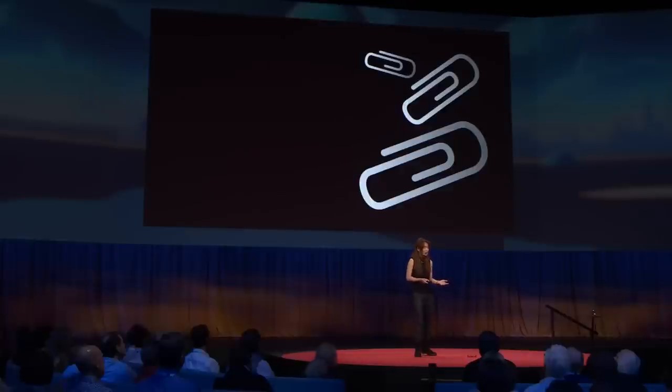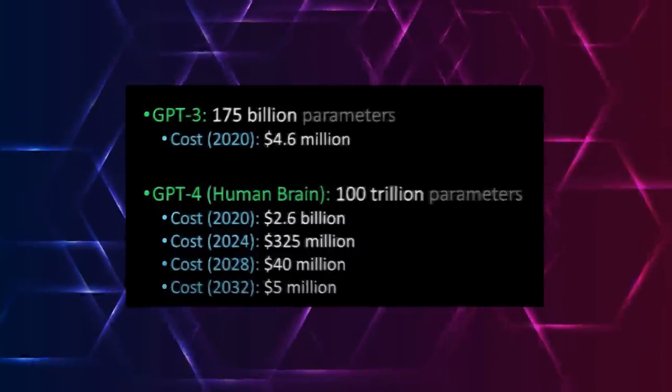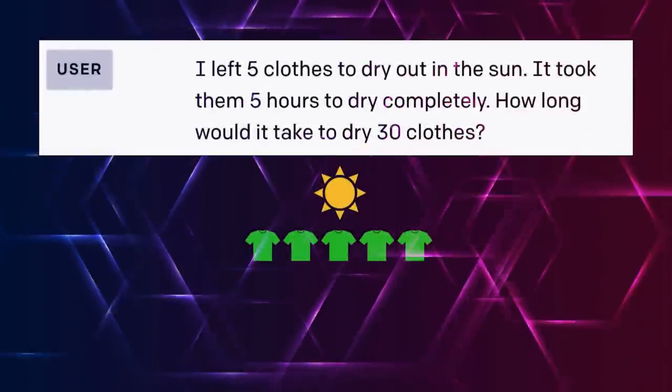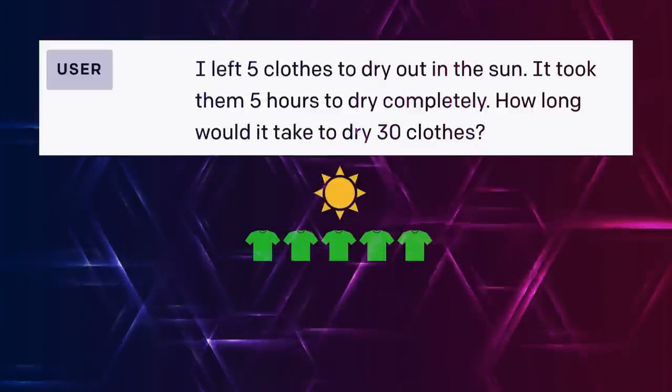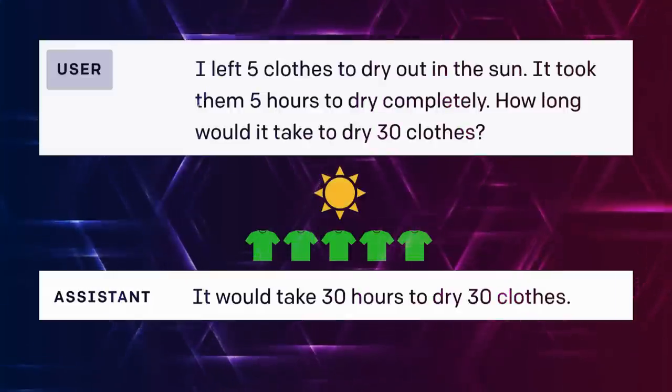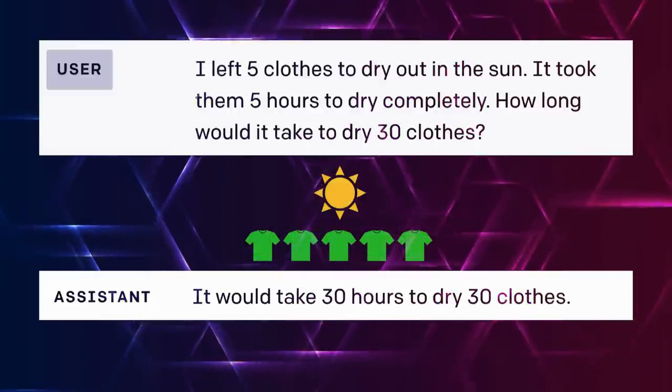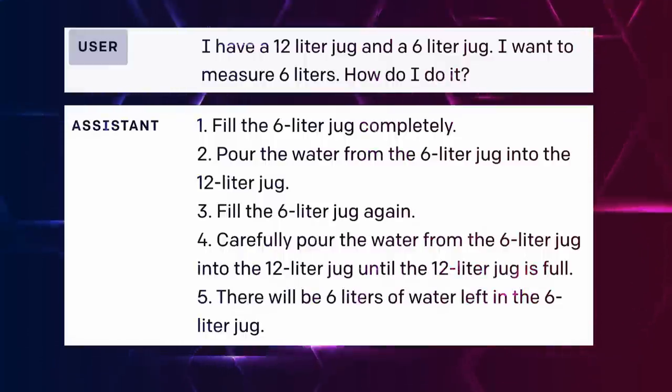Yijin goes ahead to point out these really disturbing yet laughable facts about the current LLMs, in this case GPT-4 with its over a trillion parameters. The first prompt, as you can see here, asks: I left five clothes to dry out in the sun. It took them five hours to dry completely. How long would it take to dry 30 clothes? And the response is it would take 30 hours to dry 30 clothes.